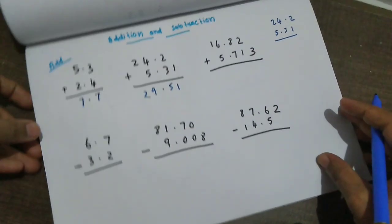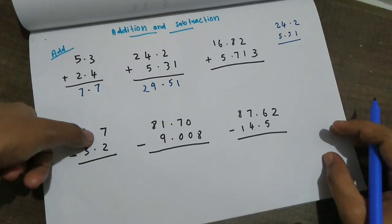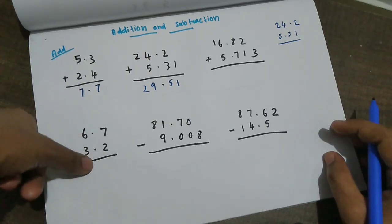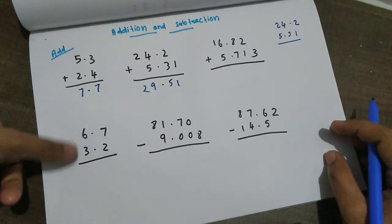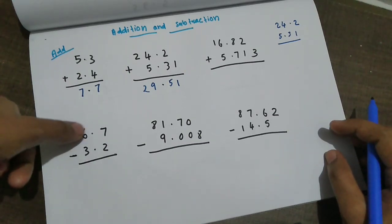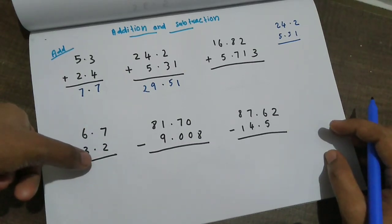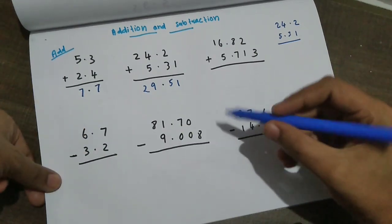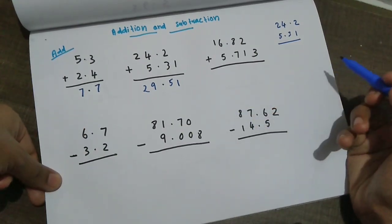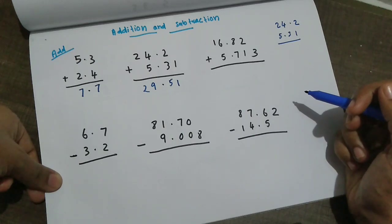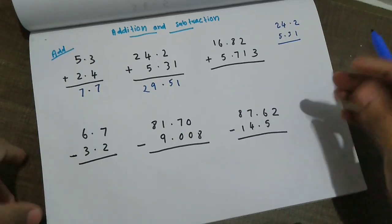Subtraction is the same way — align the decimal point. The first number and the second number share the same decimal point position. You subtract the numbers the same way as addition.